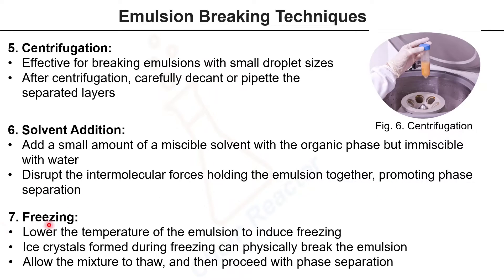The next technique is freezing. Lower the temperature of the emulsion to induce freezing — the ice crystals that form can physically break the emulsion. Then allow the mixture to thaw and proceed with phase separation. These are some of the techniques that can be used for effective emulsion breaking.